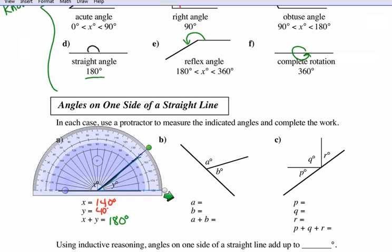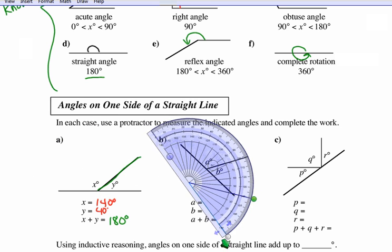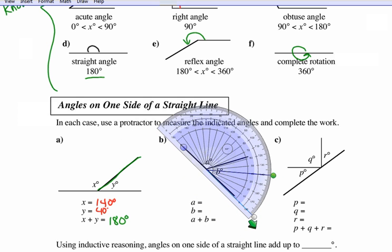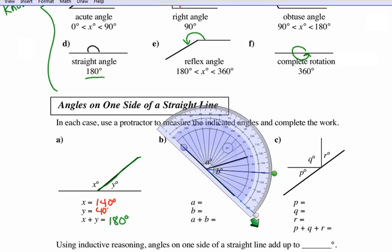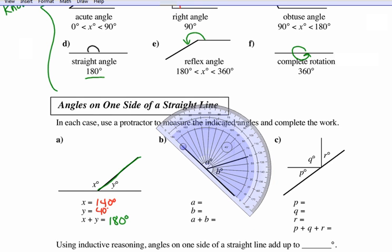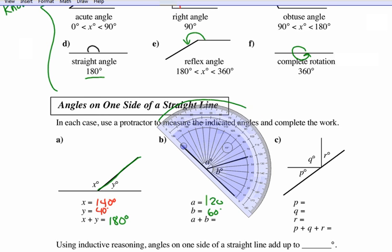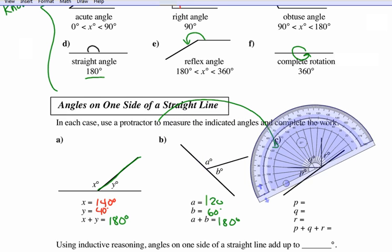Let's try another example. Put the center where the lines meet and line up both lines at the same point. Angle b is 60 degrees. For angle a, starting from the other side — zero is here, going around — it's 120 degrees. Notice they add to 180.